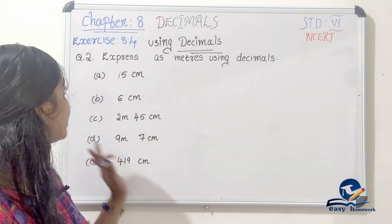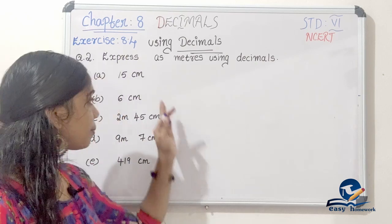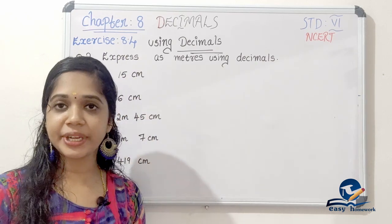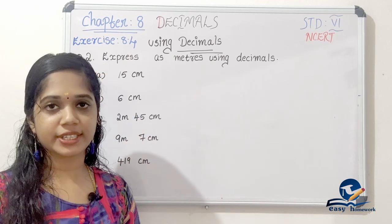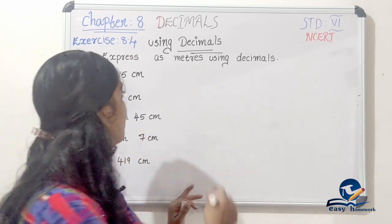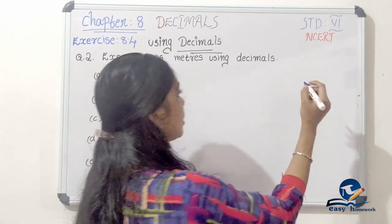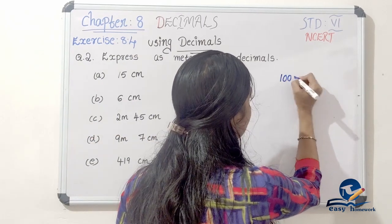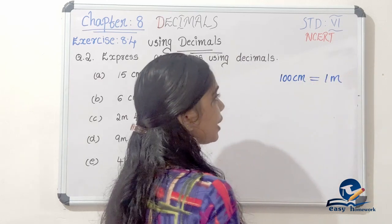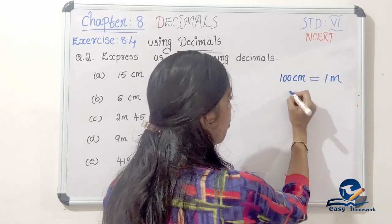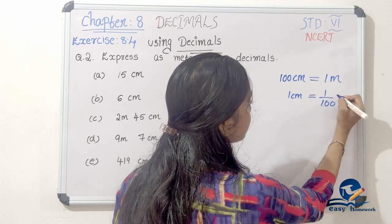Second question: Express as meters using decimals. If we have quantities in different units, we use decimals to express them in the same quantity. Let's work with centimeters and meters.